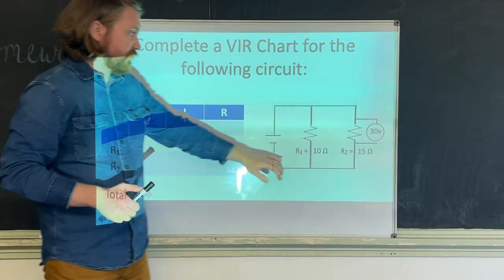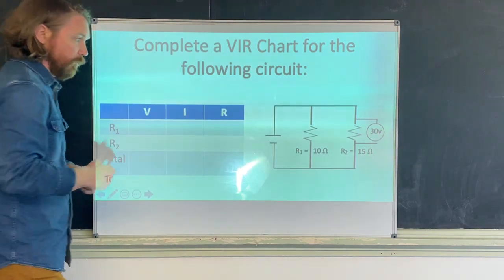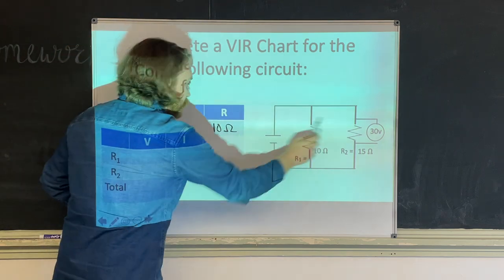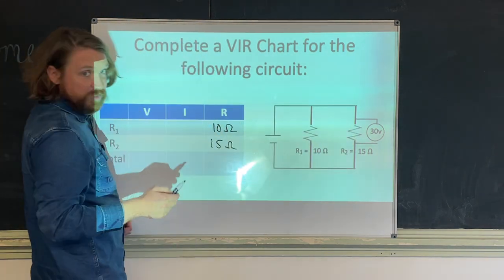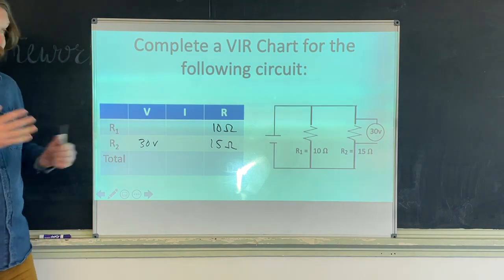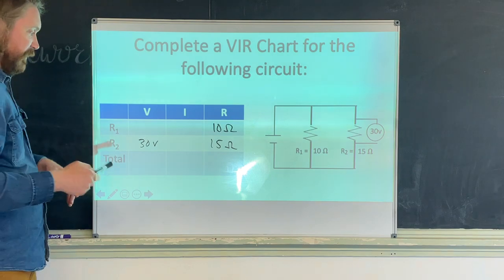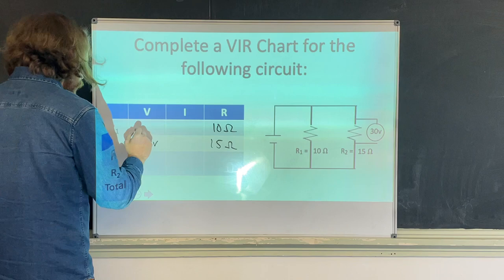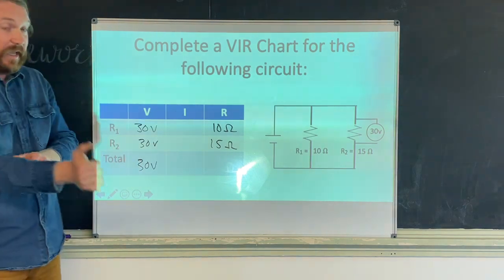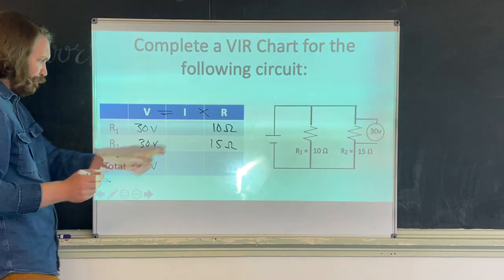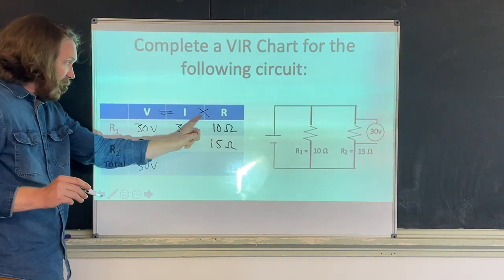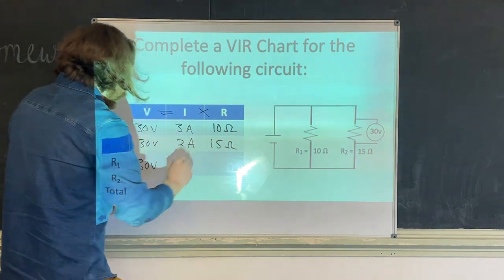Here's another example where we don't know the total voltage — we only know the voltage on one resistor. R1 = 10 ohms, R2 = 15 ohms, and voltage at R2 = 30 volts. Since voltage is the same everywhere in parallel, R1 also has 30 volts and total voltage is 30 volts. Using V = I × R: for R1, 10 × blank = 30, so I1 = 3 amps. For R2, 15 × blank = 30, so 30/15 = 2 amps.